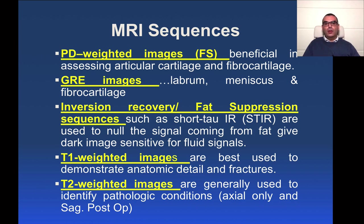Proton density with fat suppression, gradient images, and STIR sequences are the mainstay of musculoskeletal imaging. These are used for assessment of internal derangements of the joints. PD, GRE, and STIR sequences are used to assess articular cartilage and fibrocartilage abnormalities, the labrum, and the meniscus. They are fluid sensitive and very beneficial in assessment of internal derangements. We also always include a T1 and a T2 sequence for most joints.